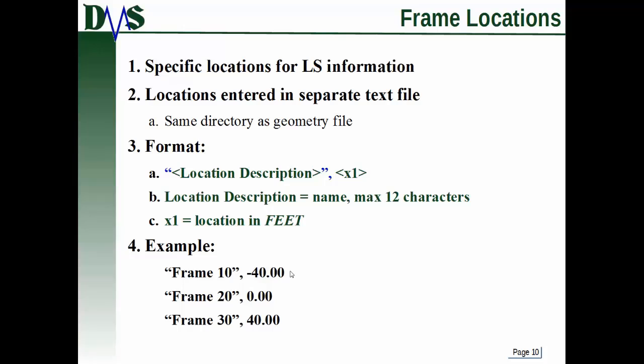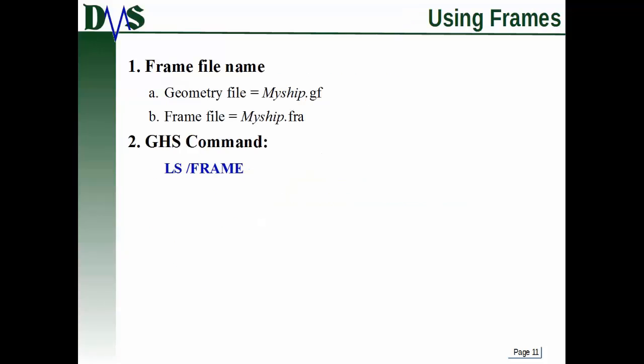So when you're typing in this, no matter what your units are that you work with in normal GHS, this frame file has to be positioned in feet. So here would be an example of a frame file. You've got frame 10, comma, negative 40. Frame 20, comma, zero. Frame 30, comma, 40. And that's the only thing you will find in that text file. No comments, nothing else.